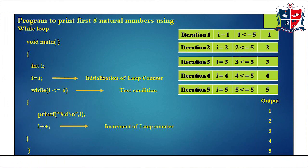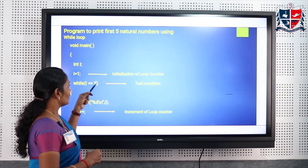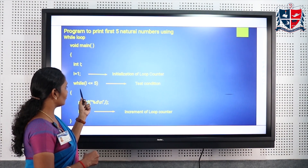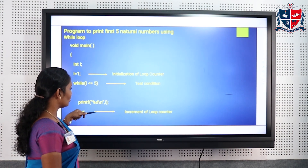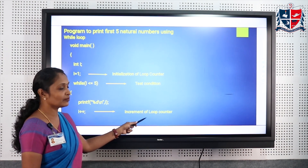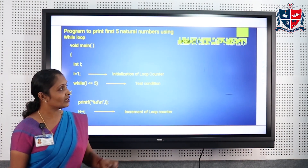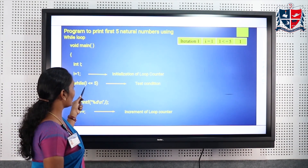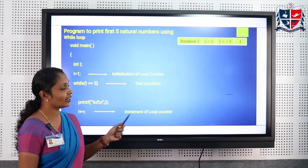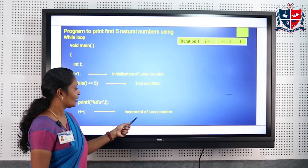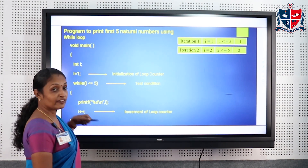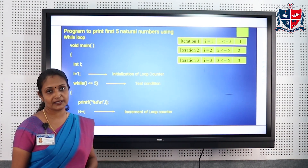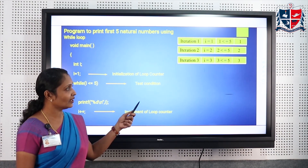Let's take an example for printing the first five natural numbers using the while loop. The variable i is initialized to 1, and the condition is while (i <= 5), then the body of the loop prints the value of i and increments the loop counter. In the first iteration, i = 1, and 1 <= 5 is true, so 1 is printed. In the second iteration, i becomes 2, and 2 <= 5 is true, so 2 is printed.